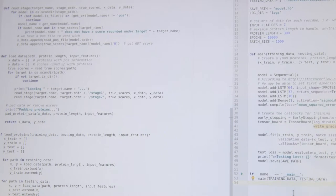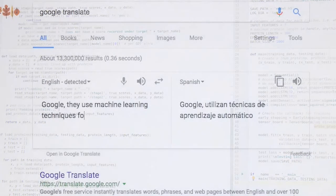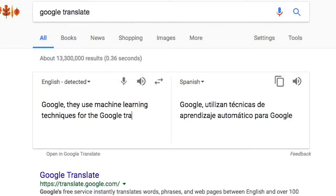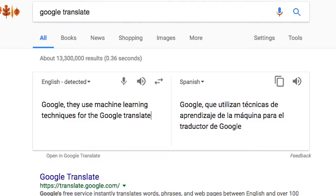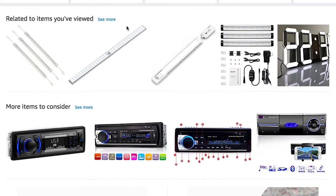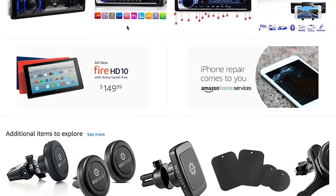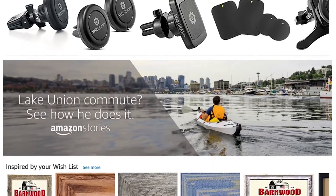More than 80% of tech companies now are using machine learning technique. Like Google, they use machine learning technique for Google translation, and Amazon, they use that technique for product recommendation.